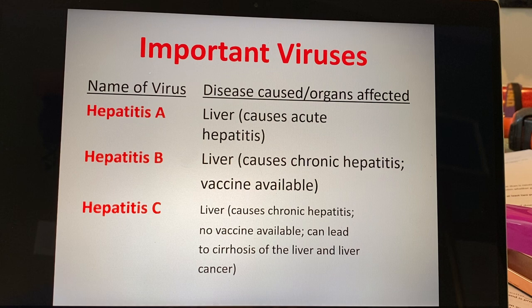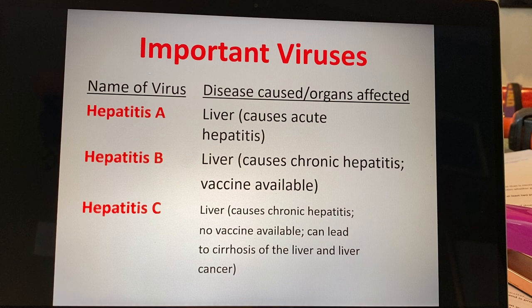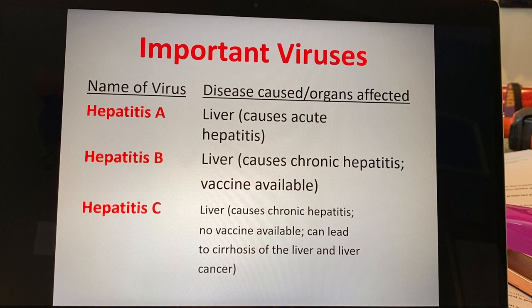The good news with hepatitis A is that it goes away — you clear the virus out of your system. That's what an acute disease means versus a chronic disease. Hep A is almost always spread when a food worker doesn't wash their hands properly. That's how the virus is passed. You will experience significant GI symptoms and your eyeballs are going to turn yellow — it's not fun to have — but you are going to recover from it and clear the virus from your system.